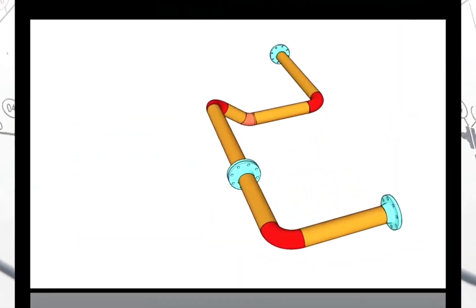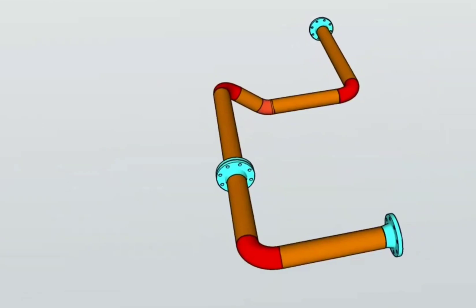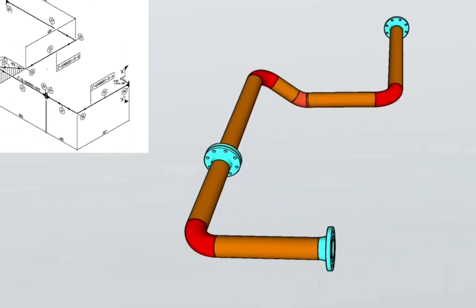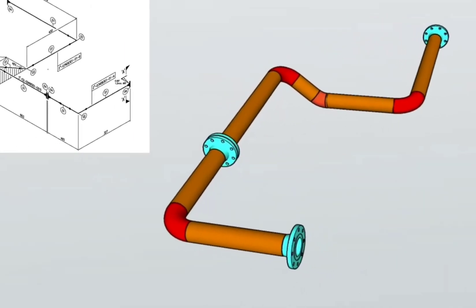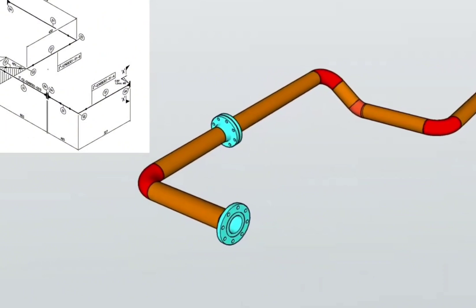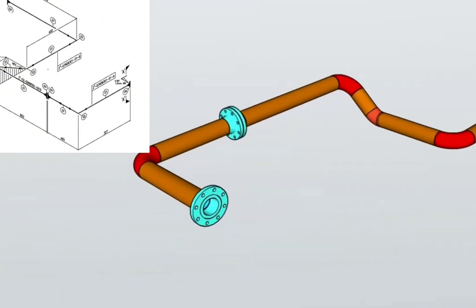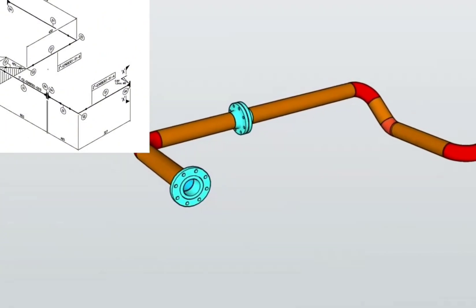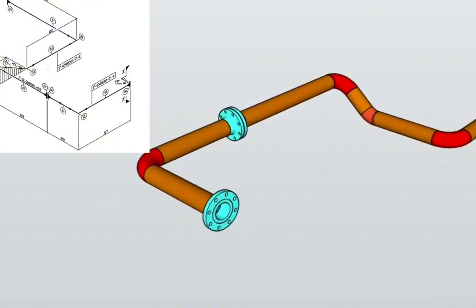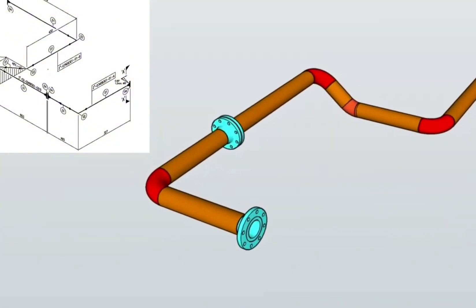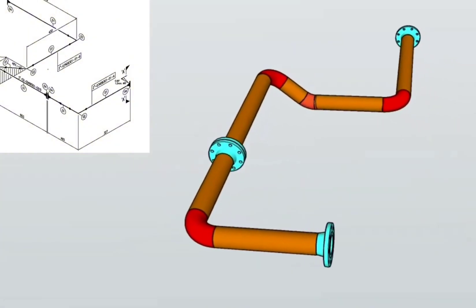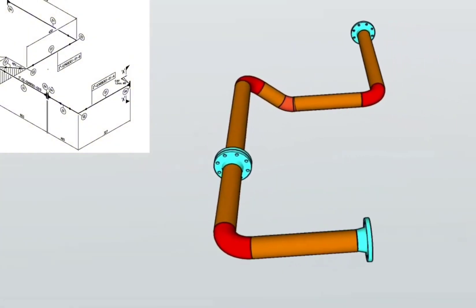Now let's look at the 3D model view of this pipeline. The wire bending and 3D view of the pipeline helps us understand pipeline isometry more easily. By comparing the 3D model of the pipeline with the pipe isometric, the pipe drawing can be easily read.